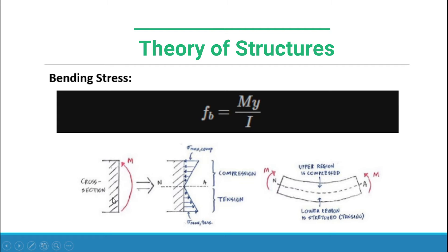Looking at the cross-section, we have a moment and the neutral axis. From the neutral axis up to the top of the beam, we have bending stress in compression. Below the neutral axis, we have stresses in tension, and at the bottom of the beam is the maximum bending stress for tension. So the upper region is compressed and the lower region is stretched, or in tension.